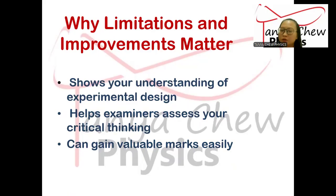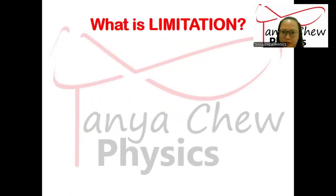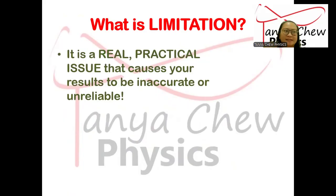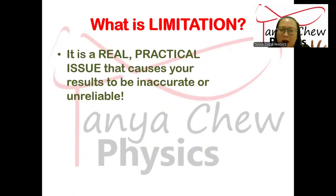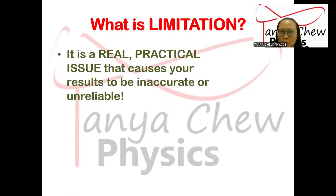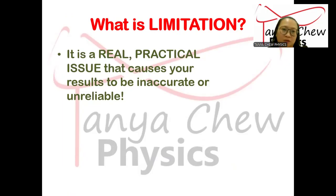Now, I keep talking about limitation, so I want to make sure you understand what a limitation is. A limitation is a real, practical issue that causes your results to be inaccurate or unreliable. Think of a limitation as something that occurs during your experiment — during the time you're conducting it — which you cannot solve immediately. That is a limitation.